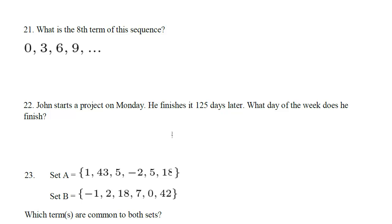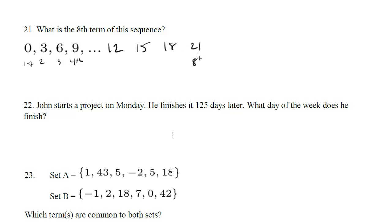Question 21: what is the 8th term of the sequence? You could use the arithmetic sequence formula if you'd like, but there's really no need to — we can just brute force it. By looking at the sequence, each term goes up by 3 from the previous term. So the fifth will be 12, the sixth will be 15, the seventh will be 18, and the eighth — the one we're looking for — is 21. So that's your answer.